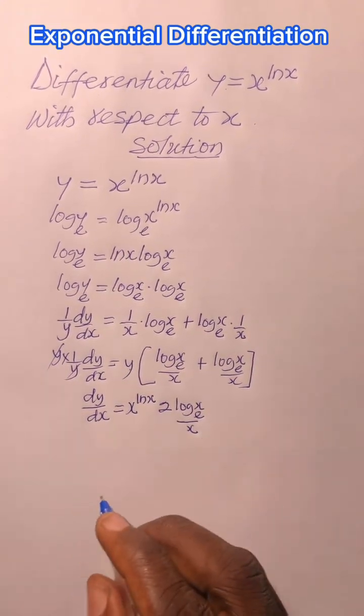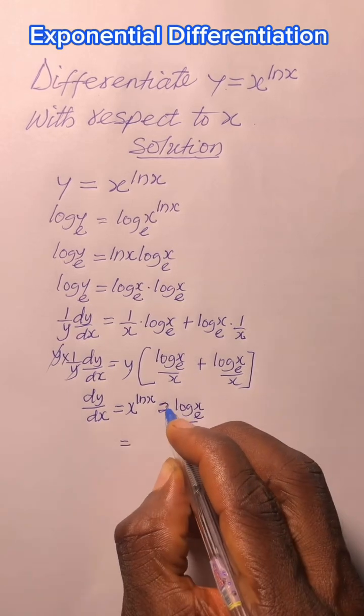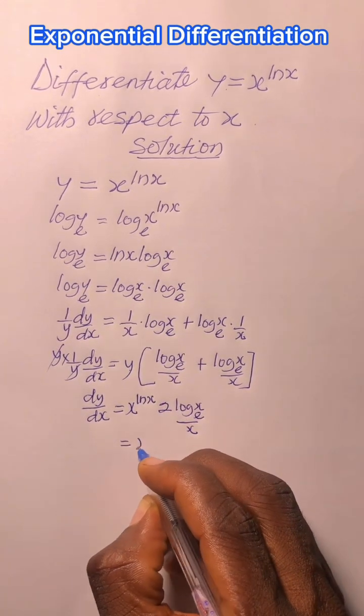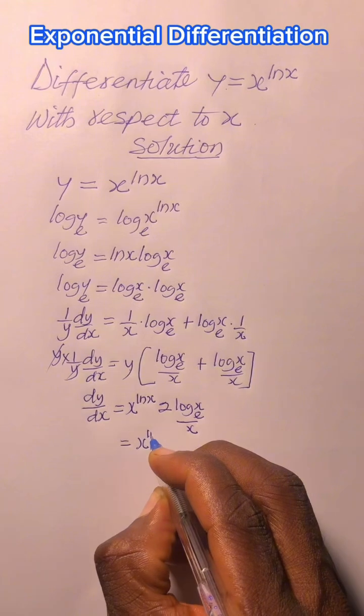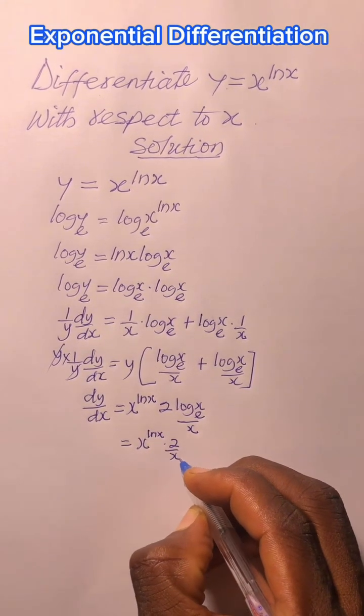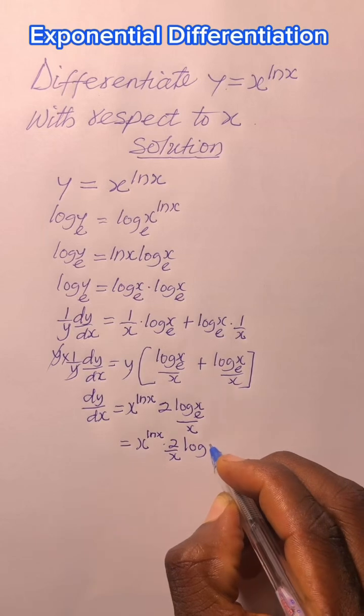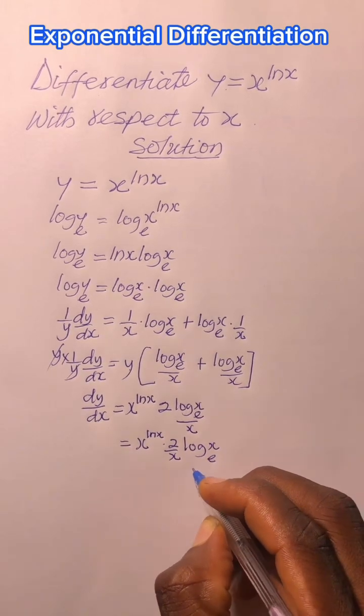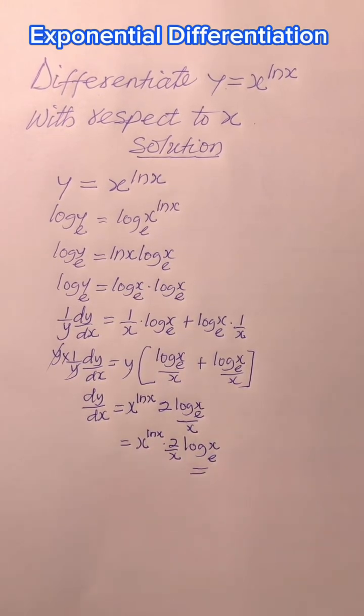So we are going to rearrange them. We have, this is the same thing as x^(ln x) · 2·log_e(x)/x. And that becomes the answer.